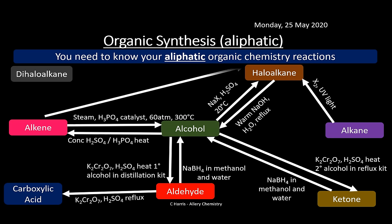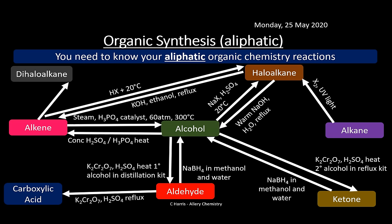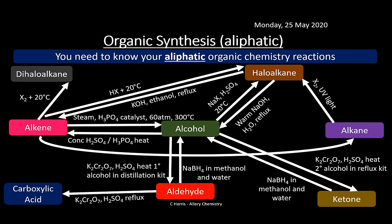Alkene to haloalkane: hydrogen halide (HX) at 20°C. Haloalkane to alkene: potassium hydroxide, ethanol, reflux. Alkene to dihaloalkane: halogen at 20°C. Alkene to alkane: hydrogen, nickel catalyst, 150°C.